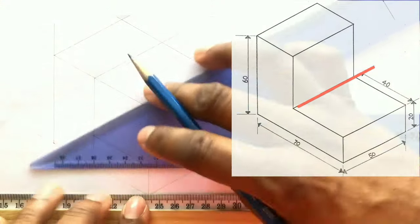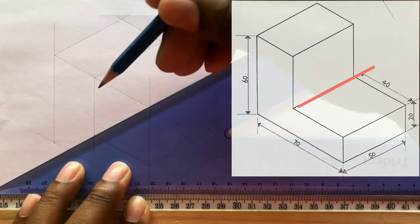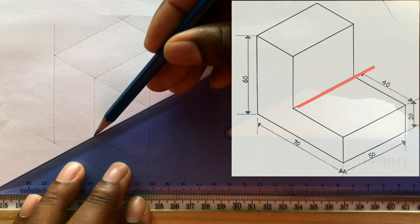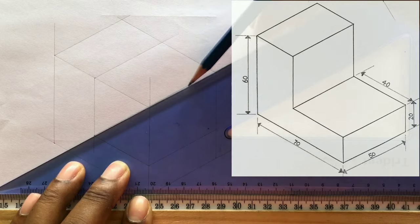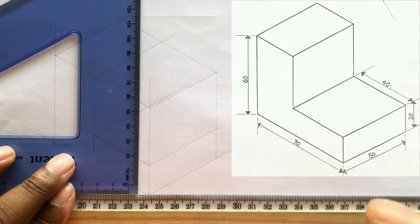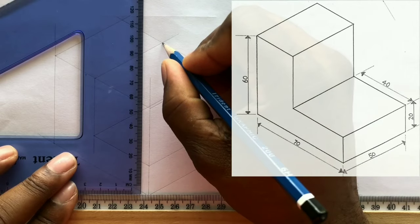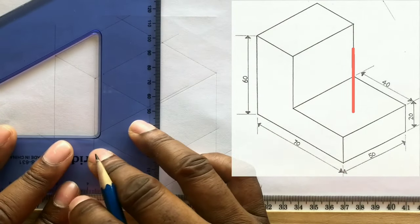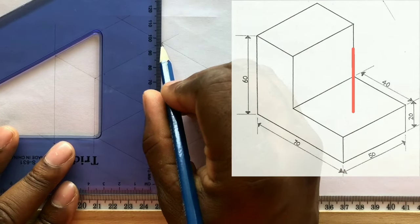Now use your set square along with your t-square and draw a line from this intersection. Now you need to draw a line from this intersection vertically. This will be done using your set square and your t-square.